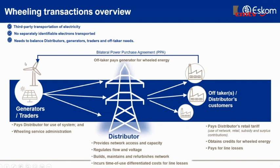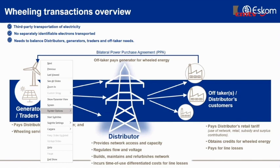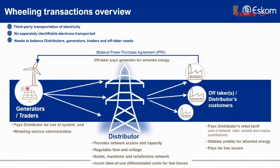When we look at wheeling in general, it's essentially the third-party transportation of energy. Wheeling is about the flow of energy from the generators through a distributor's network to the offtakers. That's what wheeling essentially is.